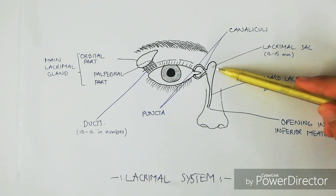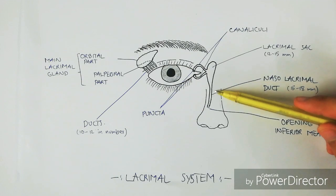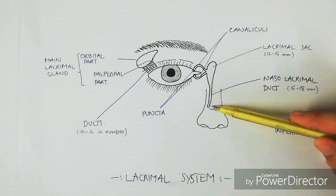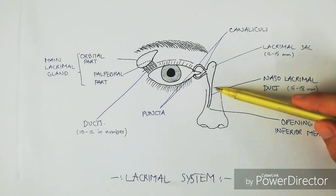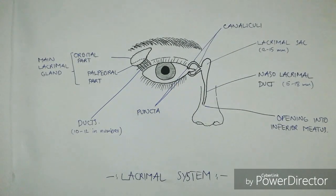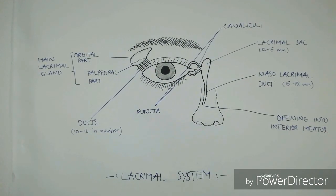The lacrimal sac opens into the nasolacrimal duct, which is about 15 to 18 millimeters long and opens into the inferior meatus of the nasal cavity. This is the reason why people get a runny nose when they are crying or have teary eyes.